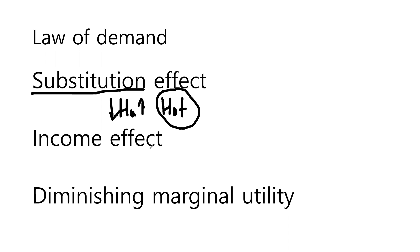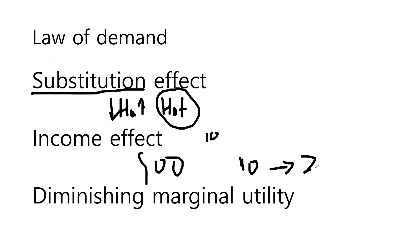The second reason is the income effect: the purchasing power of people will decrease if the price goes up. For example, if I have $100 and the price of a hot dog used to be $10, I could purchase at most 10 hot dogs. But if the price of hot dogs increases to $20, I can only purchase five. My purchasing power has decreased, so I can purchase fewer quantities than before.